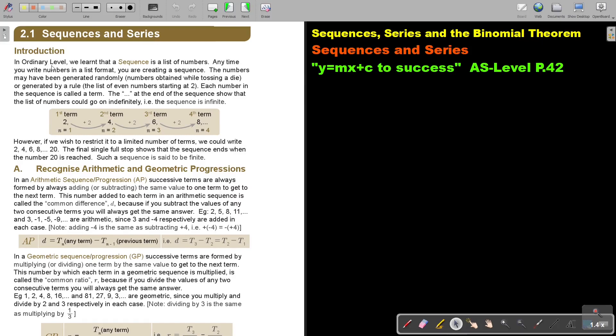Sequences and Series. Introduction. In ordinary level, we learn that the sequence is a list of numbers. Any time you write numbers in a list format, you are creating a sequence. The numbers may have been generated randomly, numbers obtained while tossing a die, or generated by a rule, the list of even numbers starting at 2, for example. Each number in the sequence is called a term.